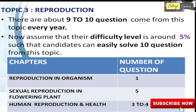The third topic is Reproduction, with about 9 to 10 questions. There are three chapters included: Reproduction in Organisms with 1 question, Sexual Reproduction in Flowering Plants with 5 questions, and Human Reproduction and Health with 3 to 4 questions.